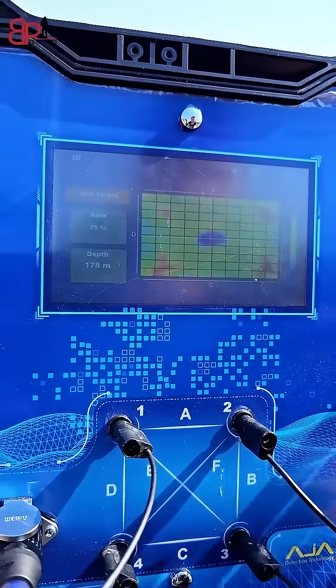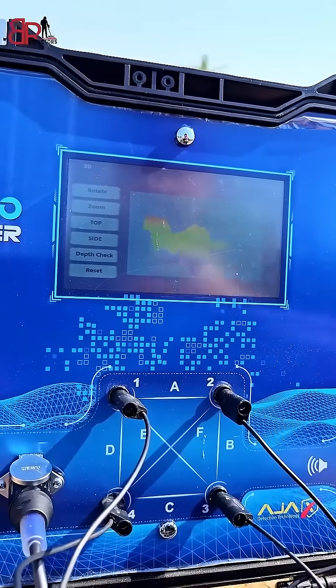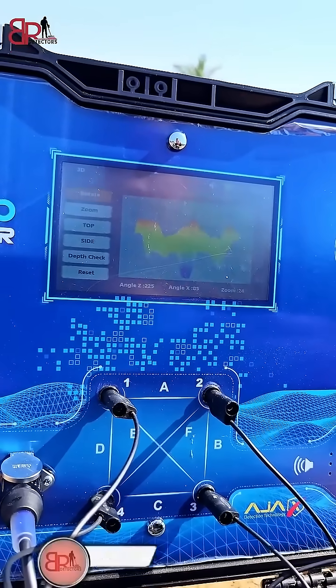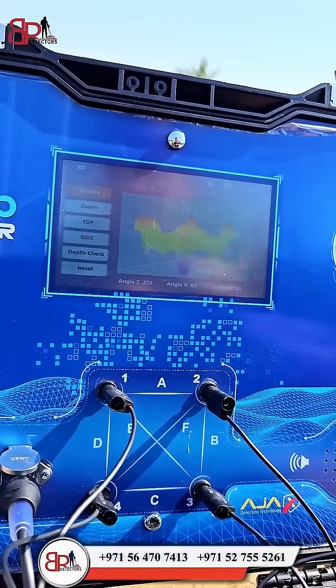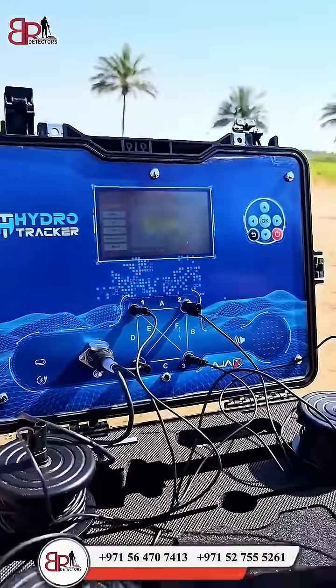We can also see the photo itself, or the image itself, by 3D projection. We have options to rotate the image, zoom the image, see it from top perspective, side perspective, and depth checking.